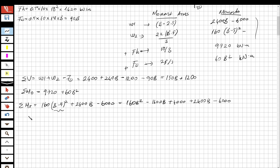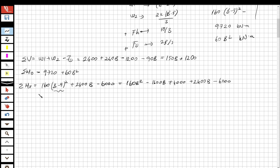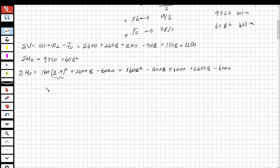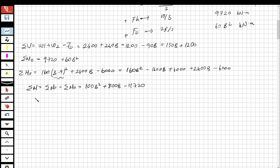The net moment is M_net = M_R − M_OT = (160b² + 800b − 2000) − (9720 + 60b²) = 100b² + 800b − 11720.